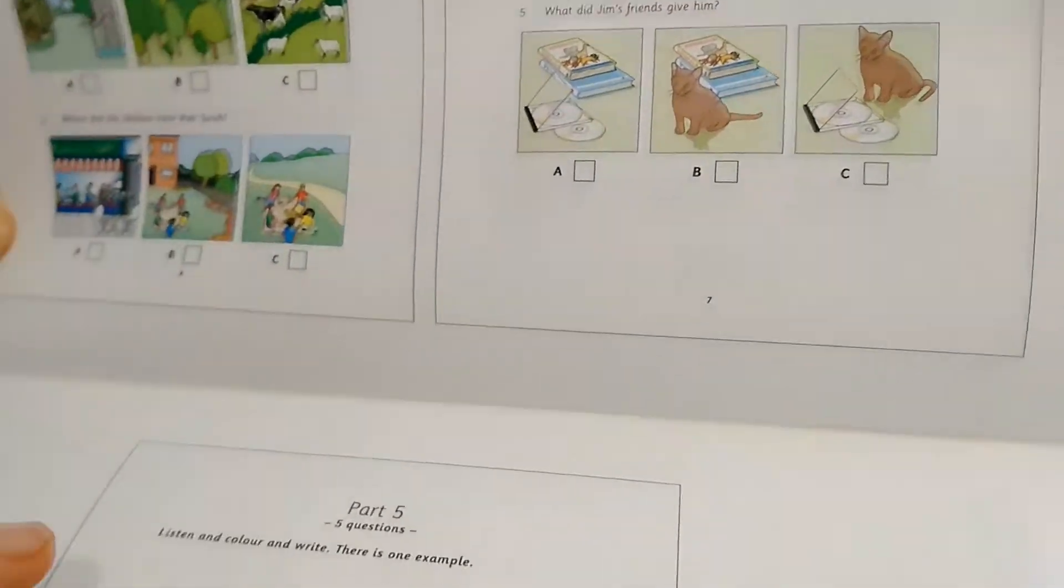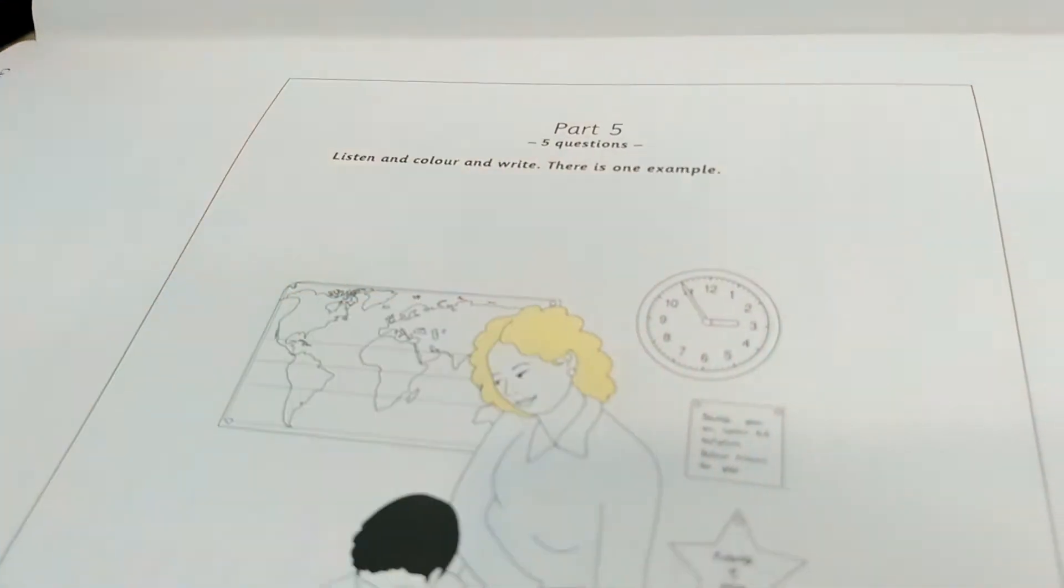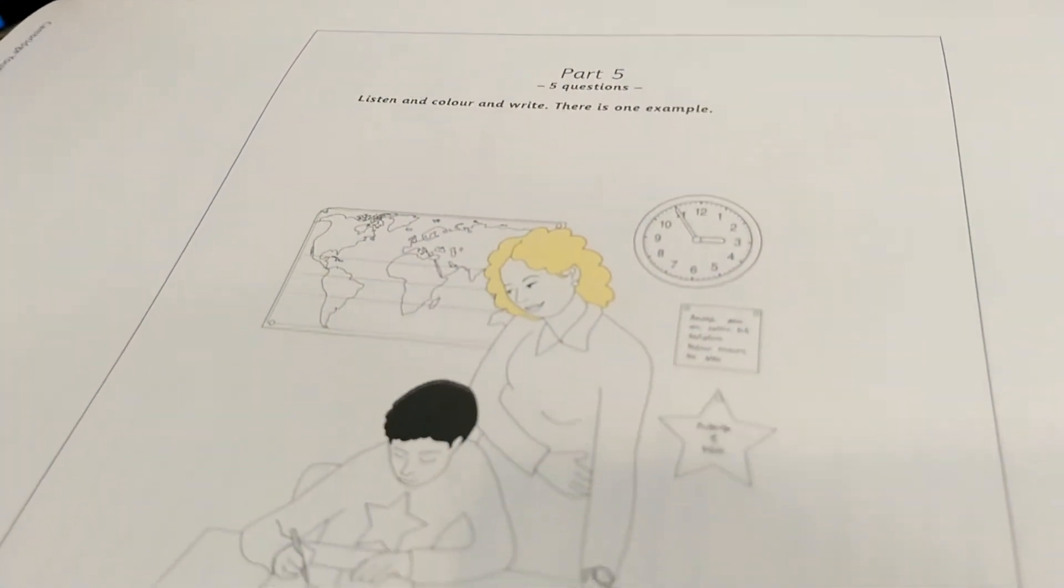Part five. You have to listen and color and write. Again, you have to color according to the information that you can get.